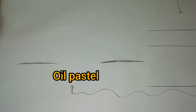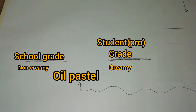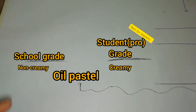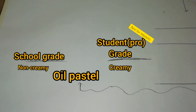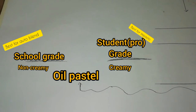Oil pastels have two categories: school grade and student grade. School grade oil pastels are similar to crayons — not very creamy. Student grade oil pastels are much creamier and softer. The best oil pastel for impasto technique is student grade, because they get overlapped without mixing. With school grade, if you apply green and then yellow on top, there's a chance they auto-blend. So whenever you want to overlap colors without blending, use student grade oil pastels.